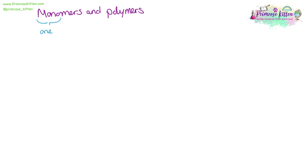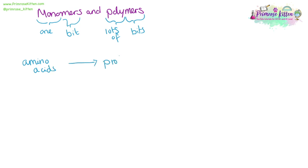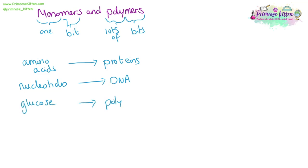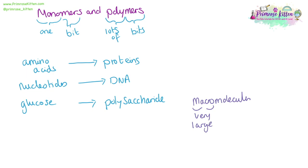There are a range of monomers and polymers you need to know about. Mono means one and mer means bit, so a monomer is one bit of something. Poly means lots, so a polymer is lots of bits. The monomer amino acid can polymerize into proteins; nucleotides are monomers that polymerize into DNA or nucleic acids; and glucose is a monomer that polymerizes into polysaccharides or carbohydrates. These polymers are examples of macromolecules — very large things like proteins.